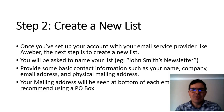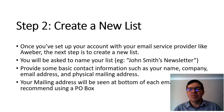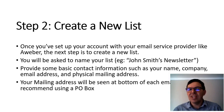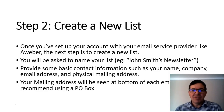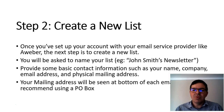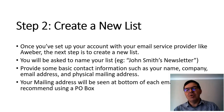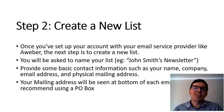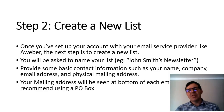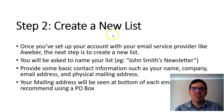Step two: create a new list. Once you've set up your account with an email service provider like Aweber, create a new list and give it a name so you know which list it is — for example a Hashing Adspace list or a newsletter like 'John Smith Newsletter.' You'll also need to provide basic contact information such as your name, company, email address, and physical mailing address. Your mailing address will appear at the bottom of each email. I recommend using your PO box — by law, when you send emails to people who have opted in, you must have your contact details included.